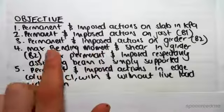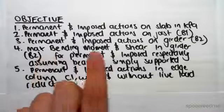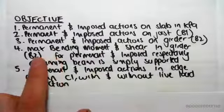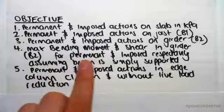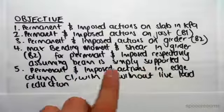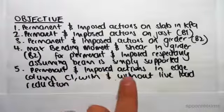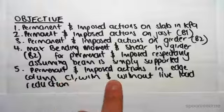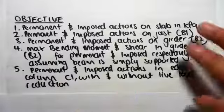the slab, permanent and imposed actions on joist, permanent and imposed actions in girder. We're going to be finding the maximum bending moment and shear in the girder for permanent and imposed actions respectively, assuming the beam is simply supported. Then we're going to be finding permanent and imposed actions in edge column C1 with and without live load reduction.